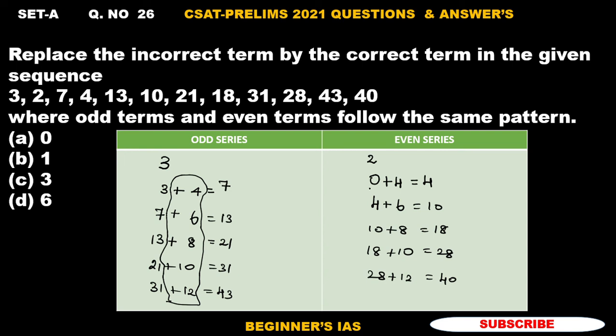Here, we have to replace 2 with 0. 2 is incorrect. We have to replace 0, that is correct, in the place of 2. On observing these two series, the first term in the even series should be replaced by 0. Therefore, option A is the correct answer for this question. With this, I am concluding this session. Thank you all.